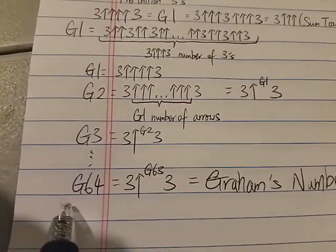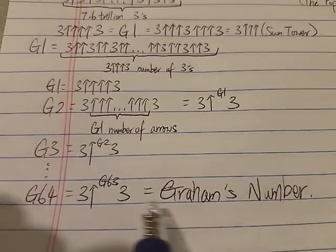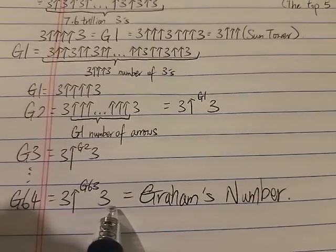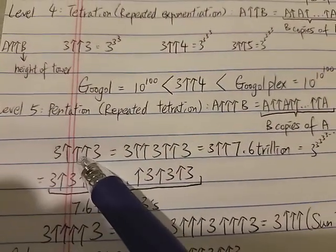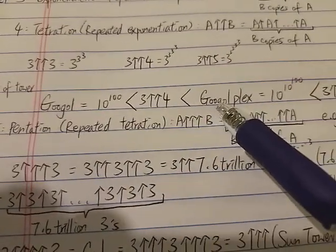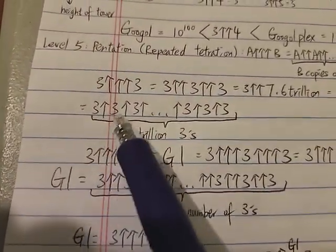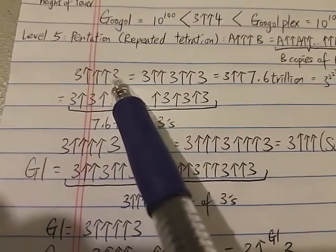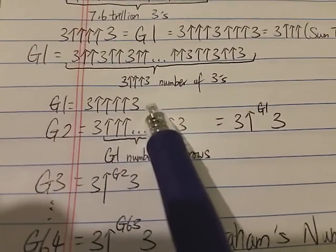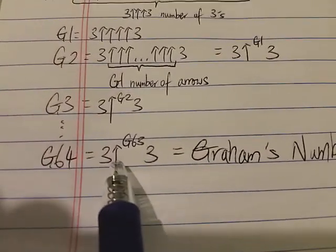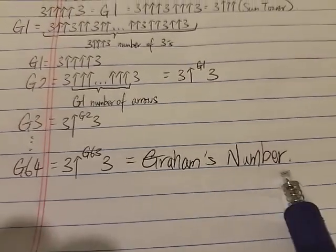We keep doing this until we arrive at G64. So G64 is Graham's number — it is 3 with G63 arrows, and then another 3. Remember, just 3↑↑↑3 is already much, much bigger than a Googleplex. And G1 is much, much bigger than 3↑↑↑3. In G1 there are only 4 arrows, but Graham's number has G63 arrows. So can you imagine how big Graham's number is?